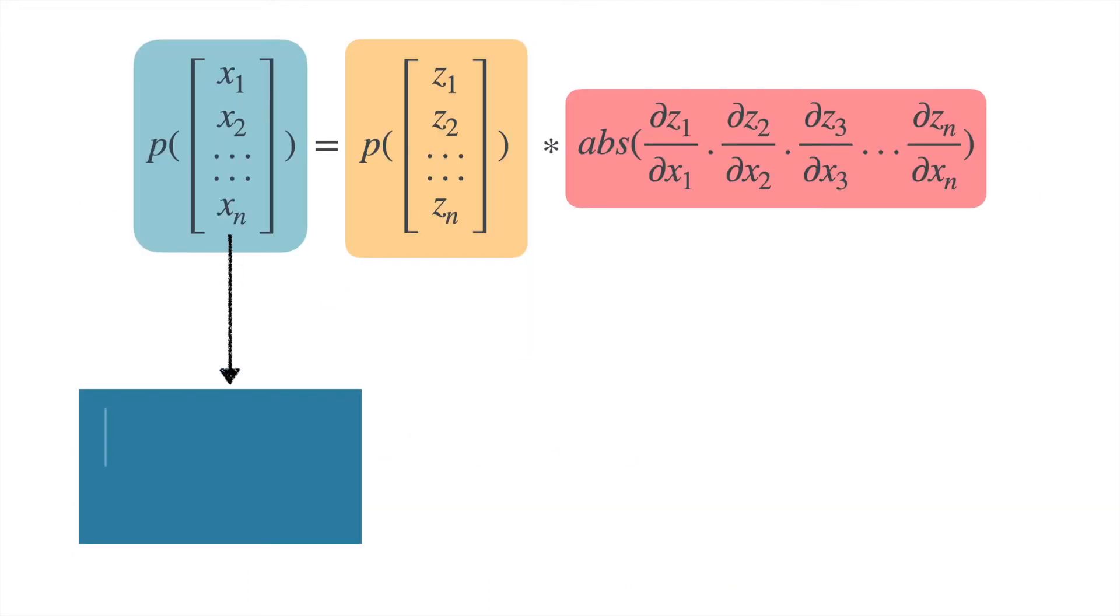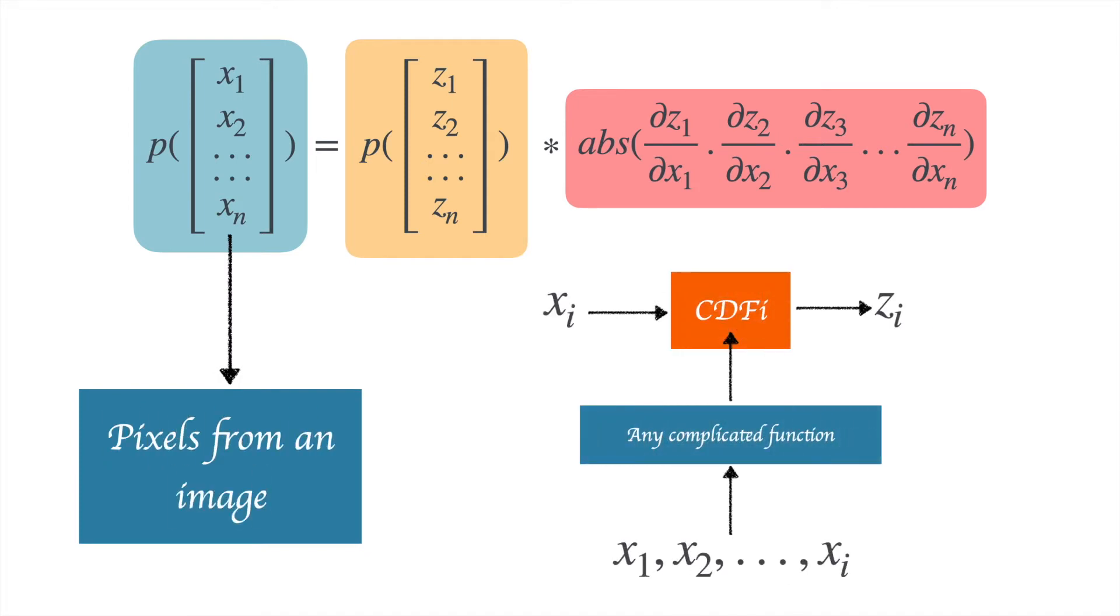This property is known as autoregressive property. In this case, these variables X1 to Xn are actually the pixels from an image. For each pixel, we would like to know a CDF to map the value from Xi to Zi. Because most of these CDFs are going to be conditioned on X1 to Xi-1, we would be using the same idea of using a complicated function to determine the weights, mus, and sigmas of the CDF and then map the value at pixel i, which is Xi, to Zi.